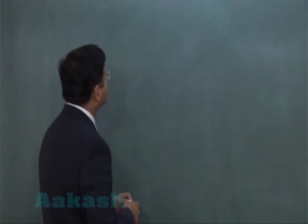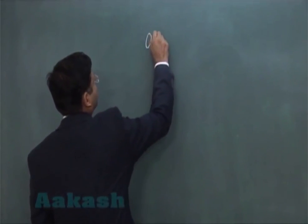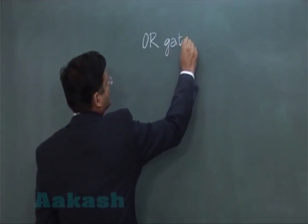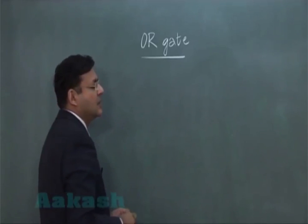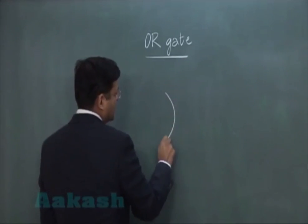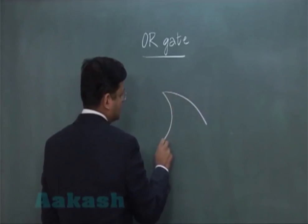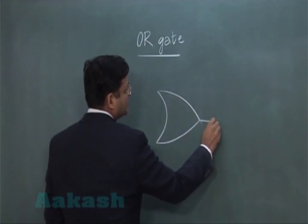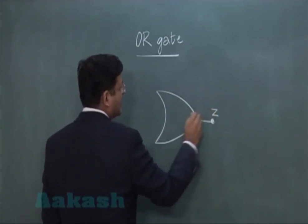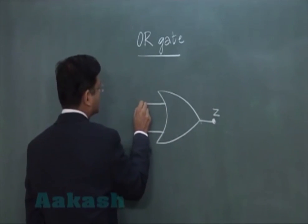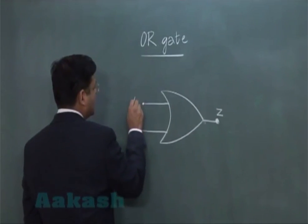Talk about a logic gate which is called OR gate. The symbolic representation of an OR gate is like this. In this particular gate you have the output here, say I am denoting it by Z and there are two inputs into this, say A and B.